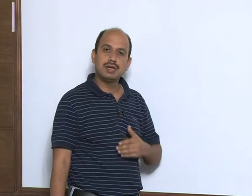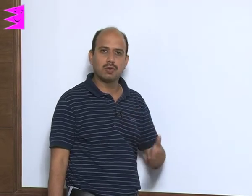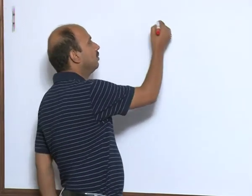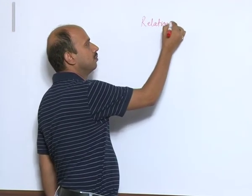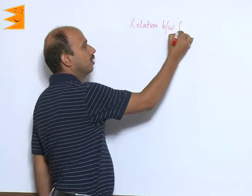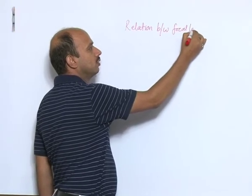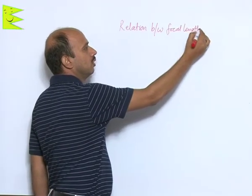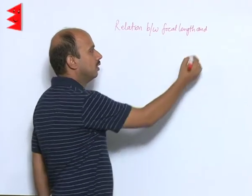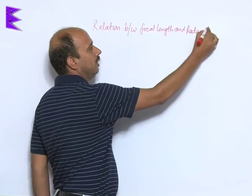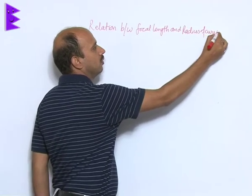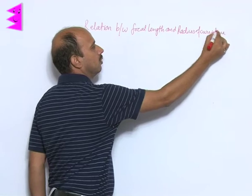Now, we have to do different mathematical relations or you can say formulas. First, we can take relation between focal length and radius of curvature.